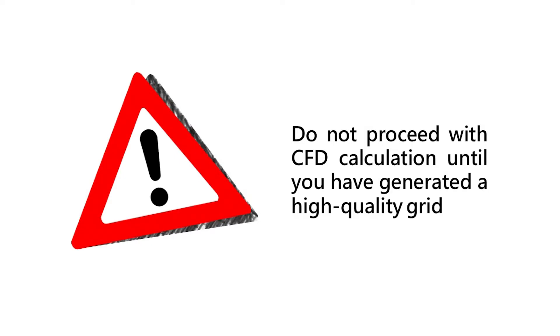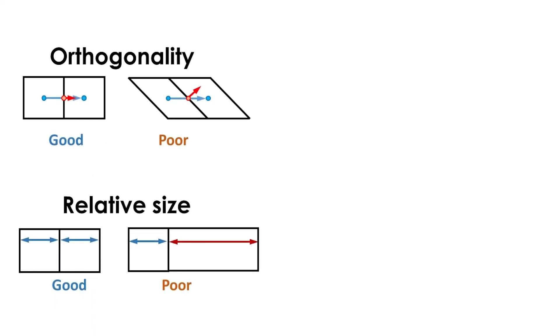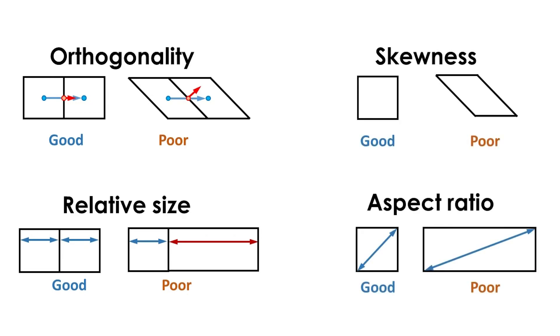Indicators of grid quality include orthogonality, relative grid spacing, cell skewness, cell aspect ratio, and so on.